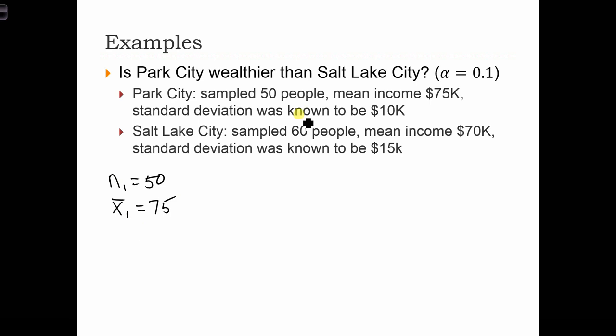Here, the standard deviation was known to be $10,000. So basically, what they're saying is instead of calculating the sample standard deviation S, they know that the population standard deviation of incomes in Park City, σ1, is equal to $10,000.